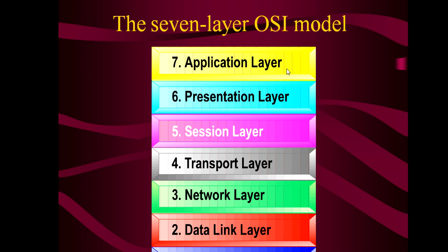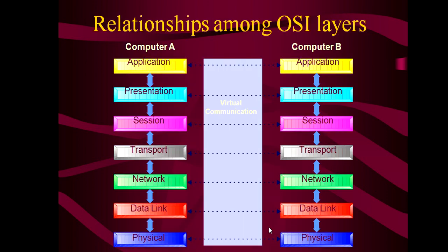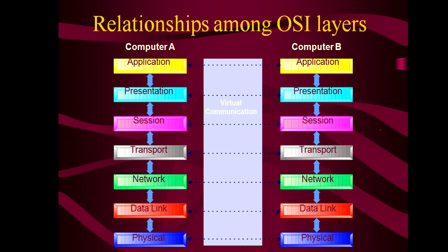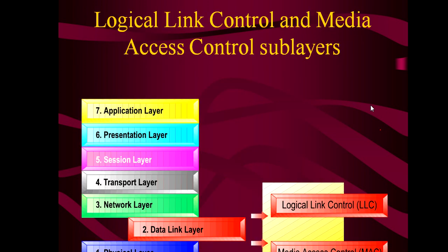Here you can see the seven layers of the OSI model: application layer, presentation layer, session layer, transport layer, network layer, data link layer, and physical layer. Suppose computer A and computer B are communicating — the peer-to-peer communication appears like a direct connection, but the physical communication actually travels through the lower layers and back up on the other end. Each layer has its own job.